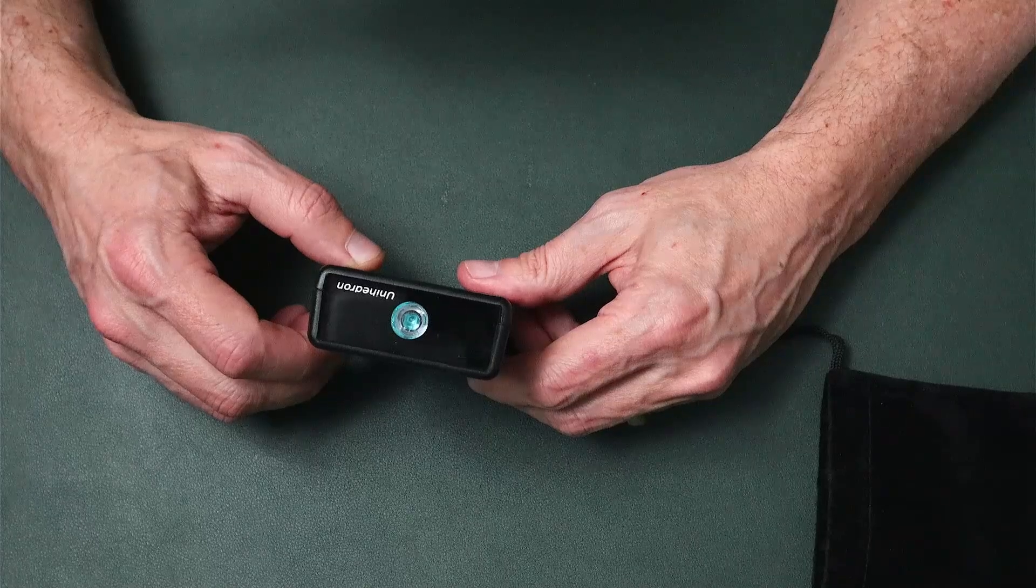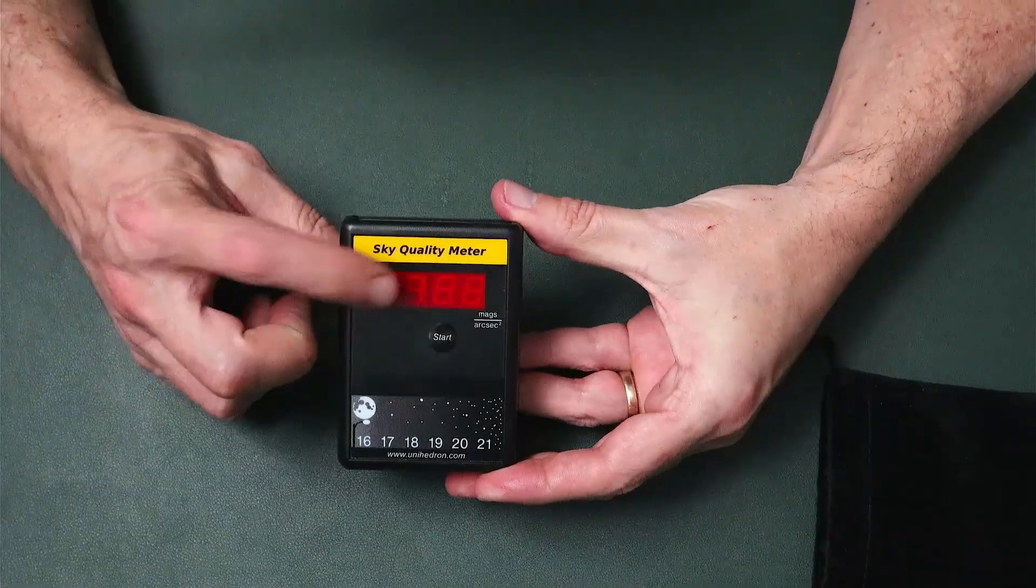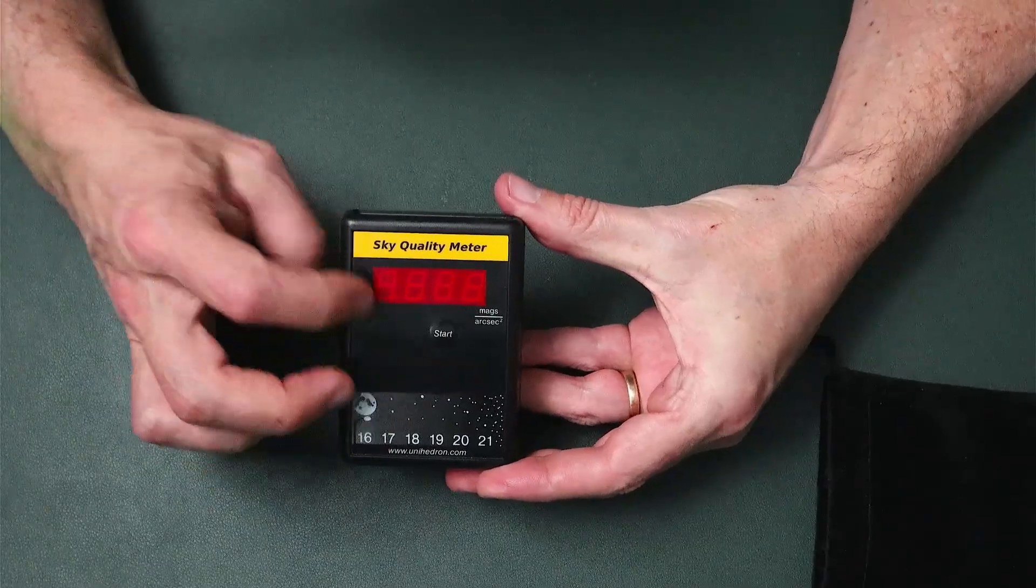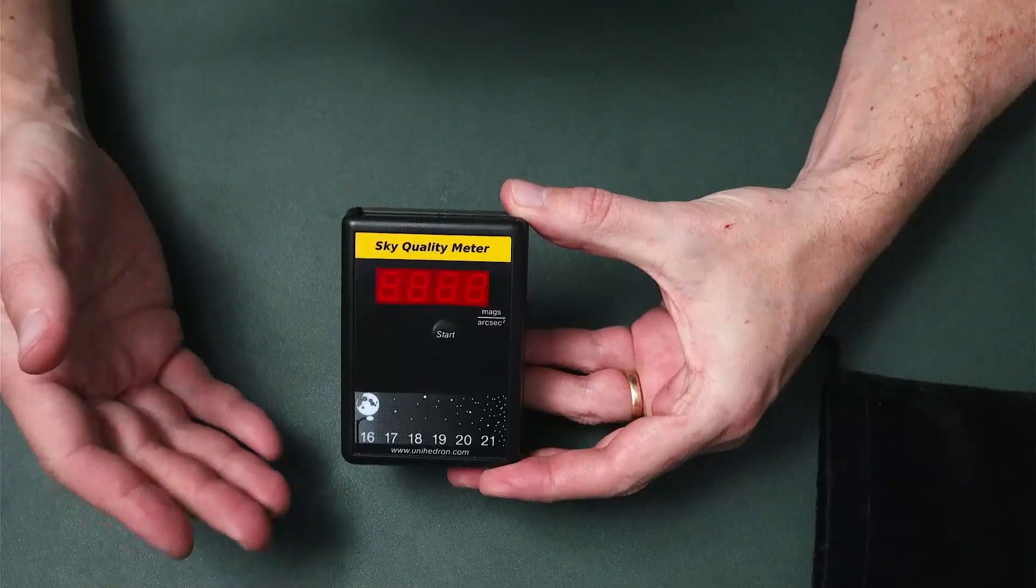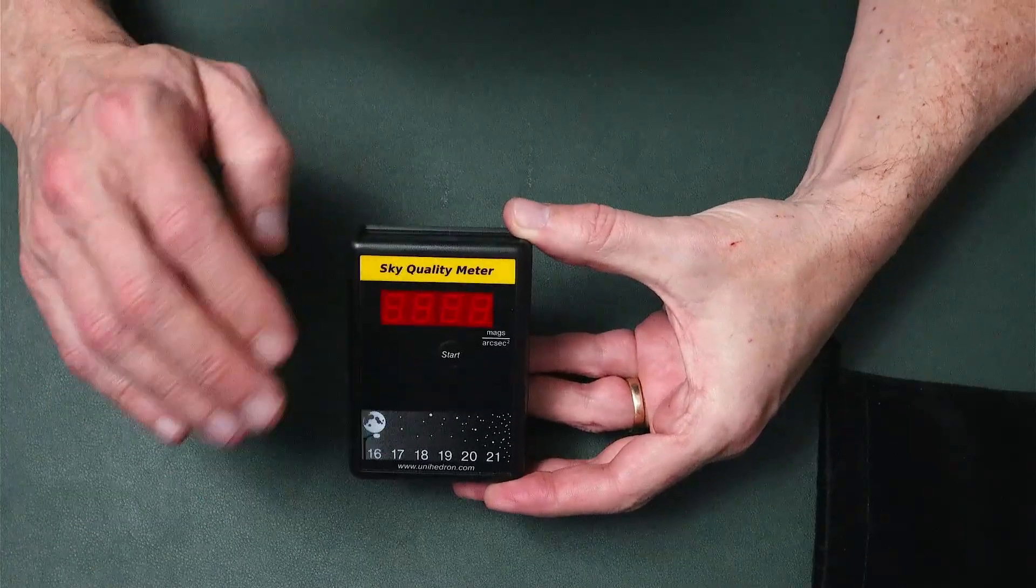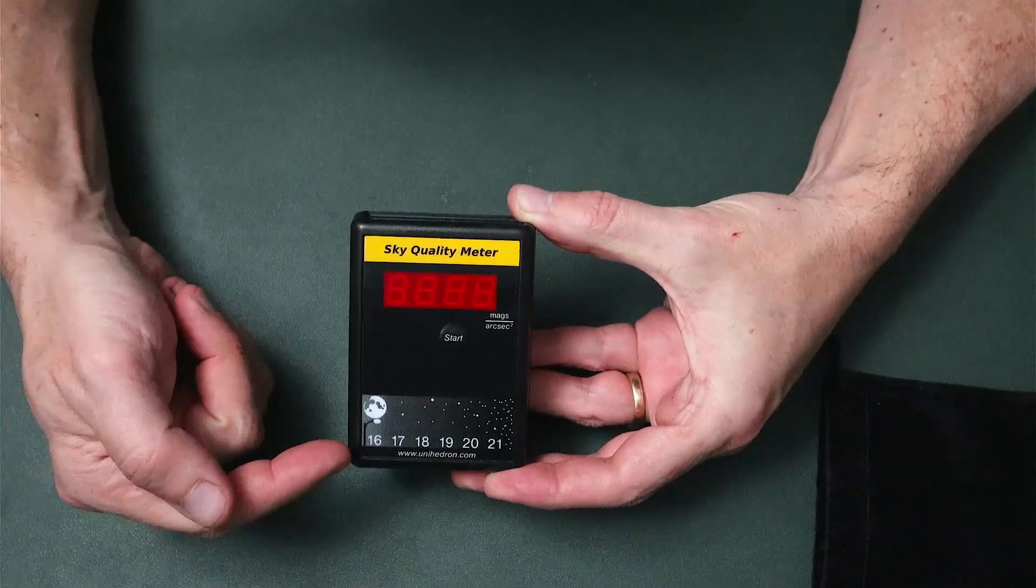Like I said, the display is red. Under really dark skies, it'll actually auto-dim. So if you're in a Bortle 1-2 type situation - we'll emulate really dark skies here in a second - but also down on the bottom, just as a guide, you know the lower the number, the brighter the sky.